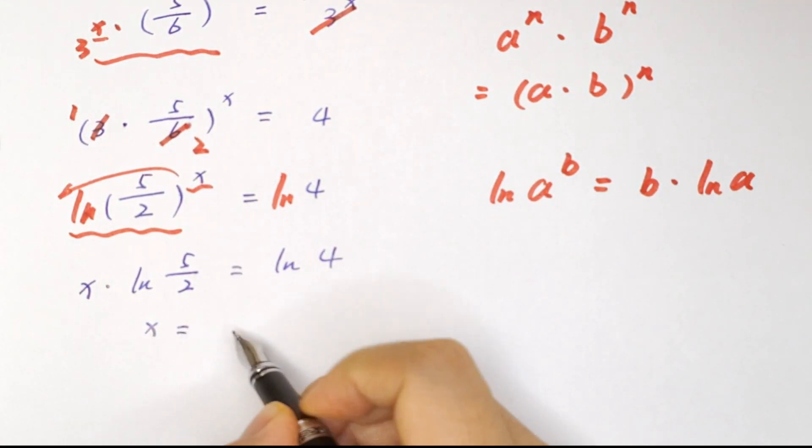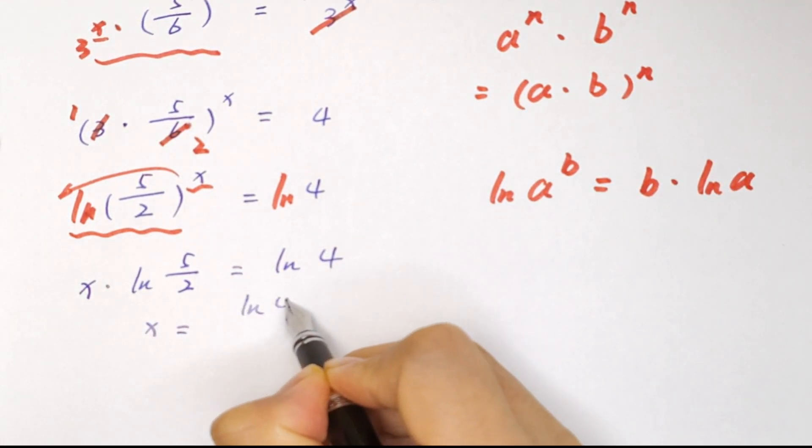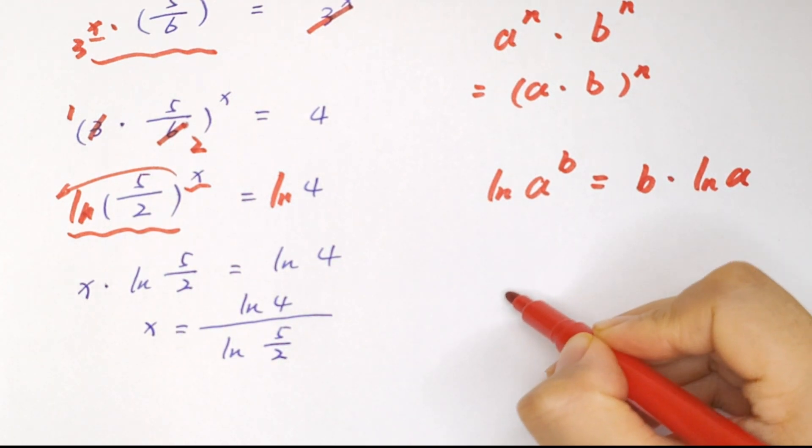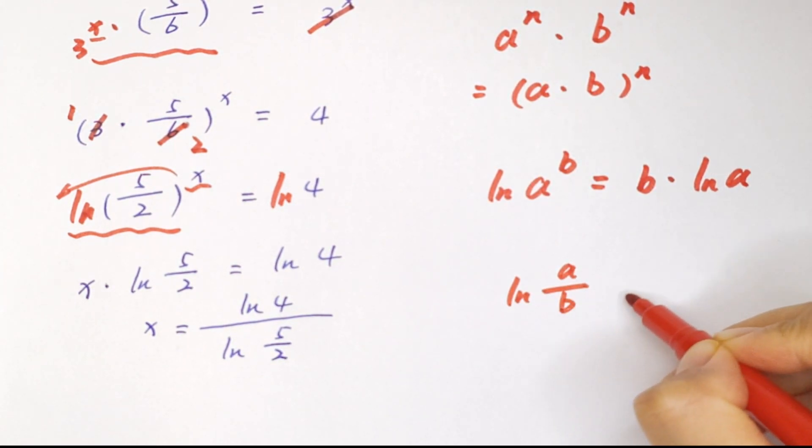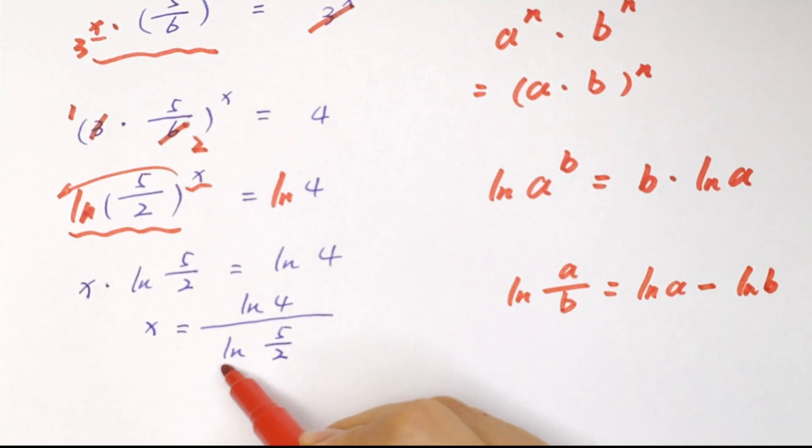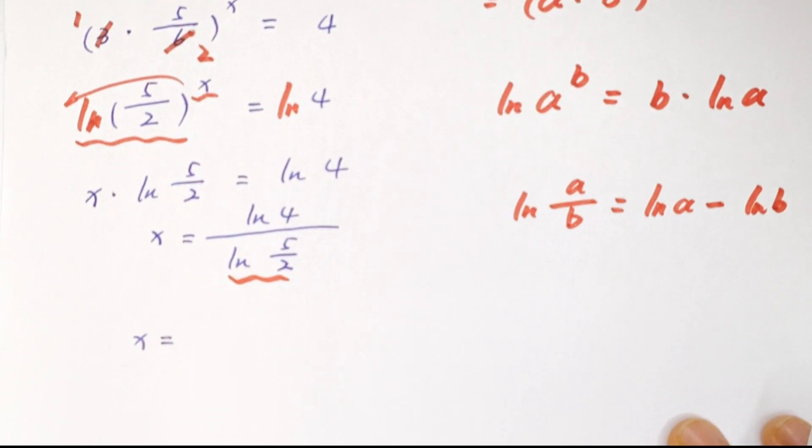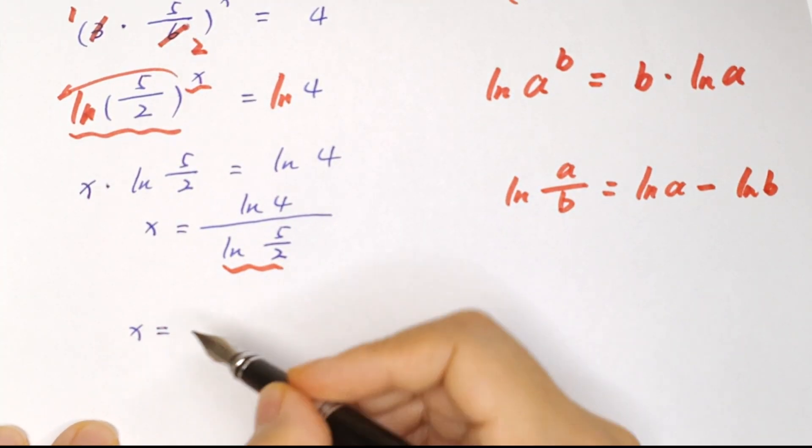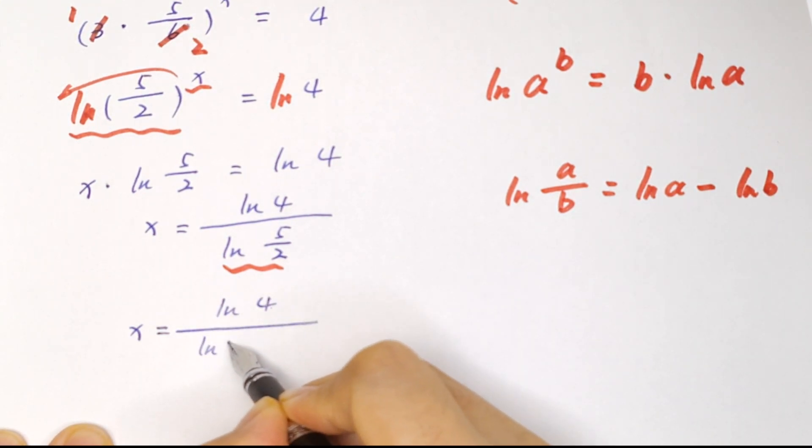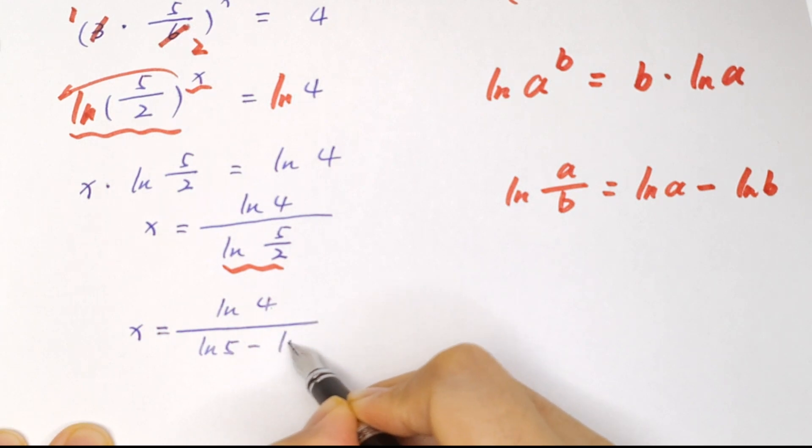x equals log 4 divided by log 5 over 2. We know log a over b equals log a minus log b. So this is x equals log 4 over log 5 minus log 2.